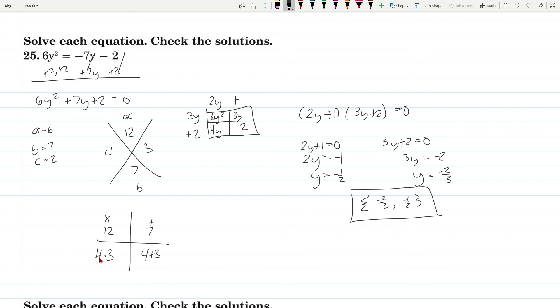Easiest one, I think, in the lesson today. 4 times 3 is 12, 4 plus 3 is 7. And so 6y squared and the 2, you get 3y and 4y. Factors out to be 2y plus 1, 3y plus 2. Set those equal to 0.